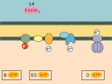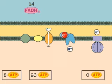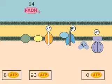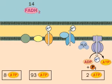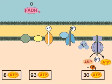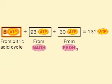Each FADH2, again rounding the numbers, makes two ATPs, or 30 from the FADH2s. And remember that eight ATPs have already been made in the citric acid cycle.